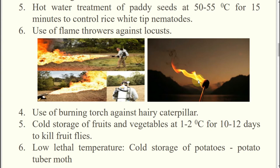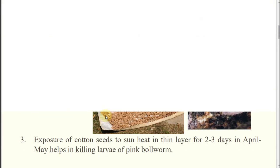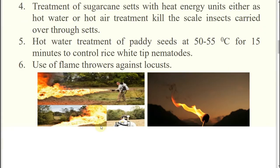Now coming to use of lower temperature. Cold storage of fruits and vegetables at 1 to 2 degrees centigrade for 10 to 12 days will kill fruit flies — the adult may not be inside, but the larva (maggots) inside the fruit will be killed. Similarly, low lethal temperature in cold storage of potato will prevent or kill the potato tuber moth larva.